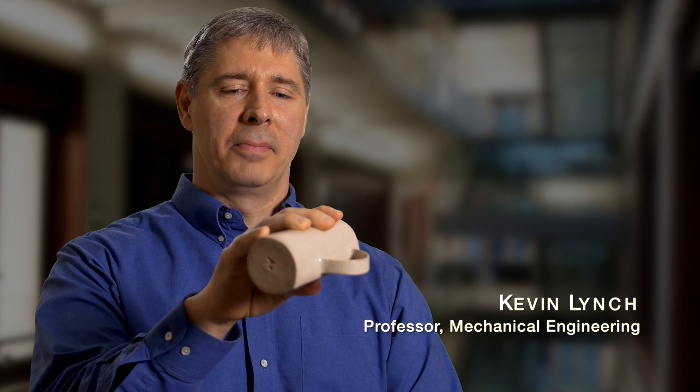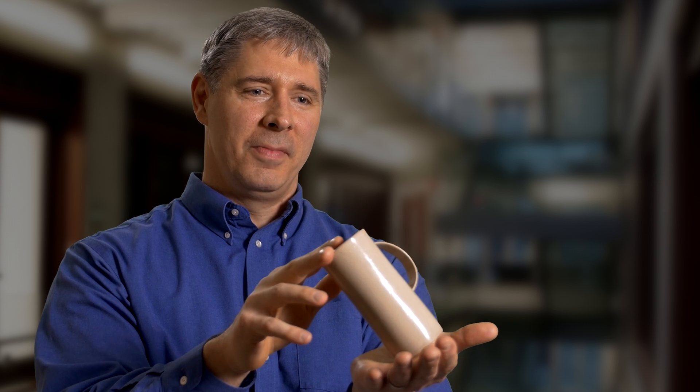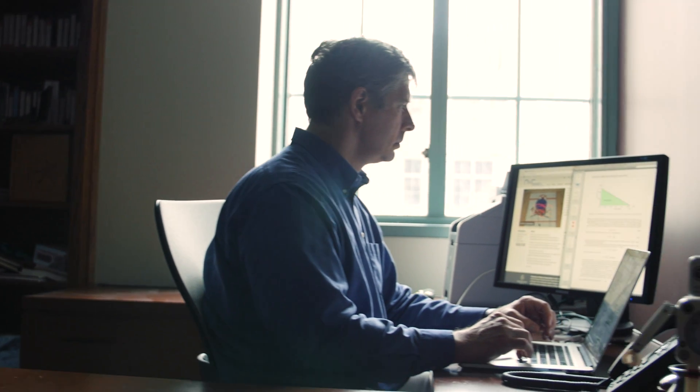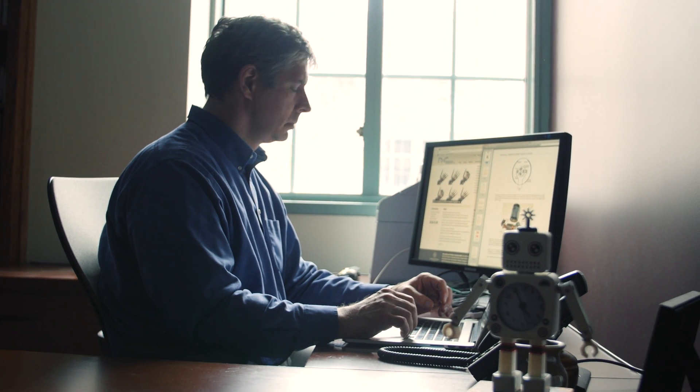Most robots currently when they manipulate an object like this coffee mug, they'll reach out and make a firm grasp on the mug and the object just follows the hand. But if you look at what humans do, there's lots of things we can do besides just pick things up and carry them around. We can throw and catch them. We can push them over surfaces. We can tip them. And my research is focused on how to give that kind of capability to a robot manipulator.